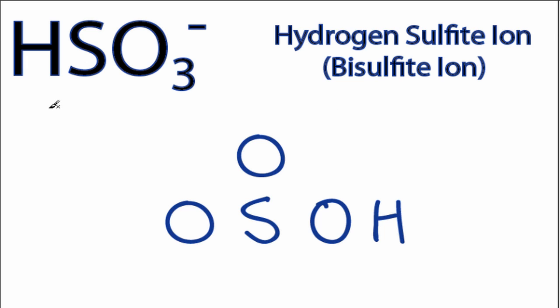For the HSO3 minus Lewis structure, we have a total of 26 valence electrons. We'll put two between atoms to form chemical bonds, we've used eight,